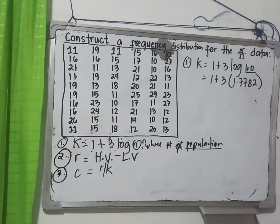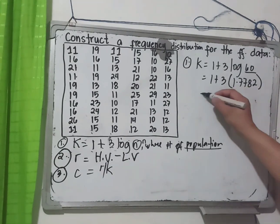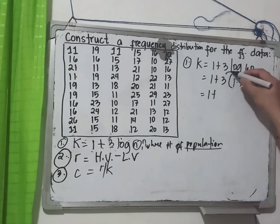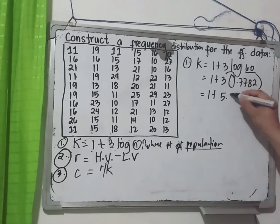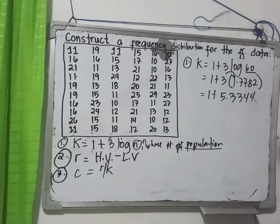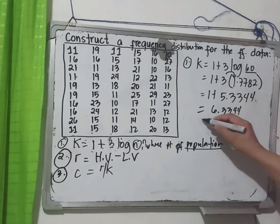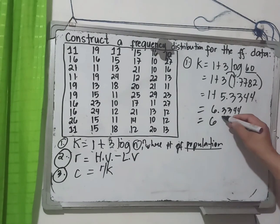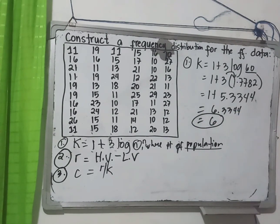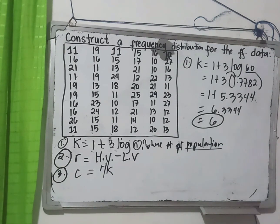Using your calculator, log 60 is equivalent to 1.7782. Then simplify: 1 plus 3 times 1.7782 equals 1 plus 5.3344, which equals 6.3334. The value of k is 6, which is our number of classes.